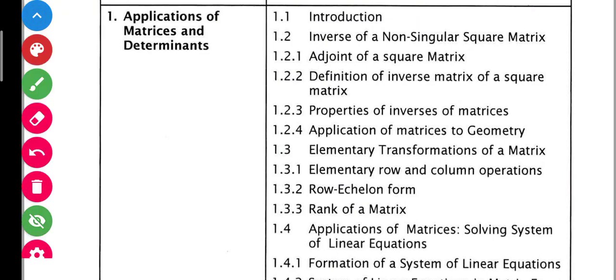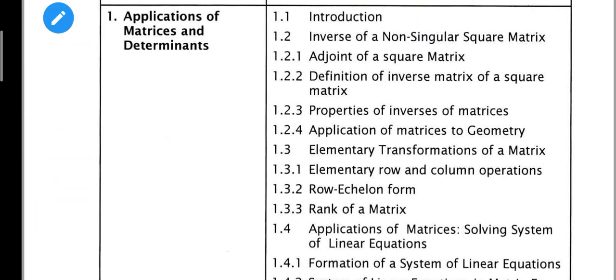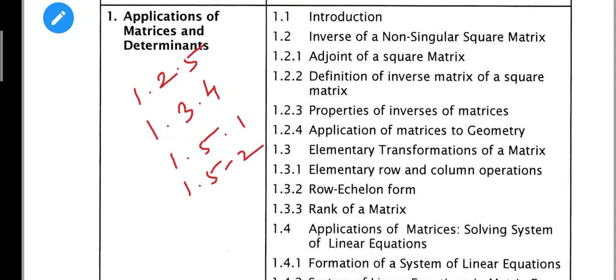In the first chapter, we will talk about heading 1.2.5. Here we will talk about that heading. So sum number heading 1.3.4, 1.5.1, and then 1.5.2. Here we will talk about heading-related sums.